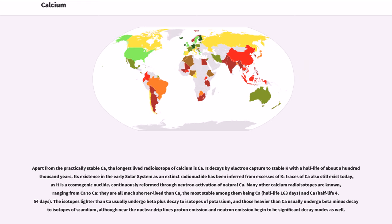Apart from the practically stable ⁴⁸Ca, the longest lived radioisotope of calcium is ⁴¹Ca. It decays by electron capture to stable ⁴¹K with a half-life of about a hundred thousand years. Its existence in the early solar system as an extinct radionuclide has been inferred from excesses of ⁴¹K. Traces of ⁴¹Ca also still exist today, as it is a cosmogenic nuclide, continuously reformed through neutron activation of natural ⁴⁰Ca.